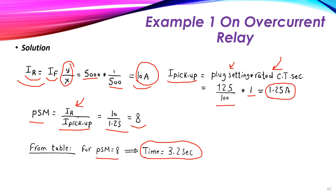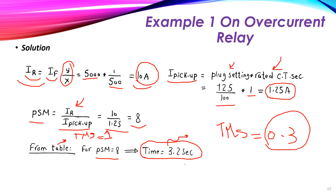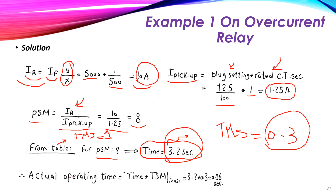However, this 3.2 seconds is the time at TMS equal to 1, and the required TMS is 0.3. So we multiply: actual operating time = 3.2 seconds × 0.3 = 0.96 seconds. This is the actual time taken by the relay to clear the 5000 ampere fault.